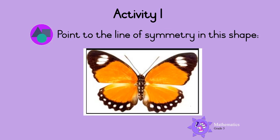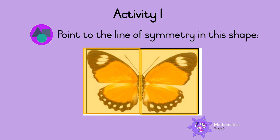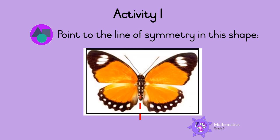Activity 1. Point to the line of symmetry in this shape. Let's do this together. Remember, the line of symmetry cuts the shape into two equal halves. So this is the line of symmetry. Well done!